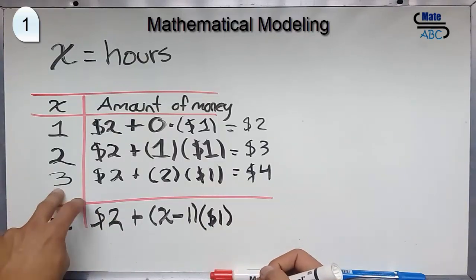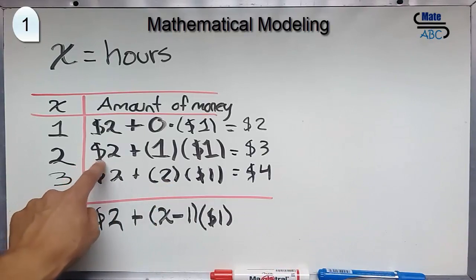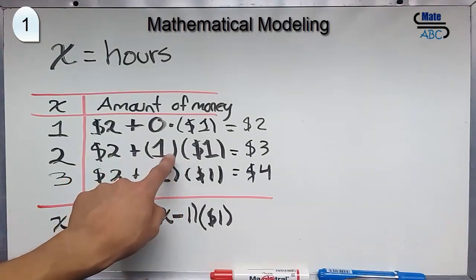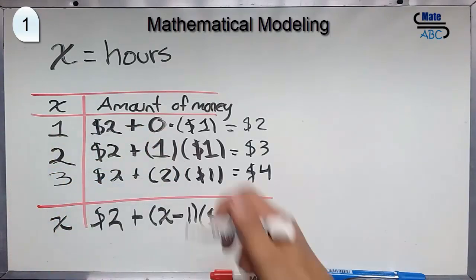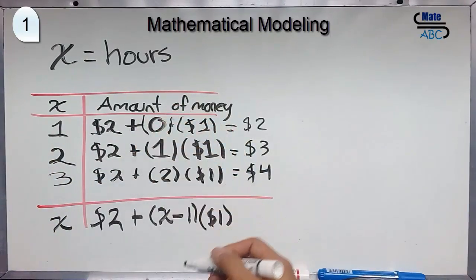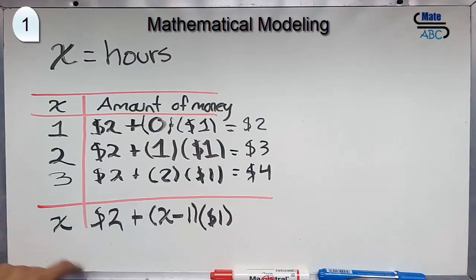As you can see, 3 minus 1 equals 2, 2 minus 1 equals 1, and 1 minus 1 equals 0. So, our logic is good. We found the general rule.